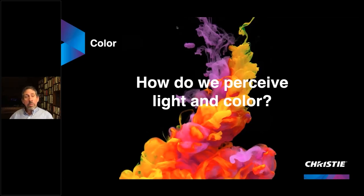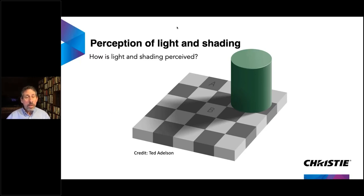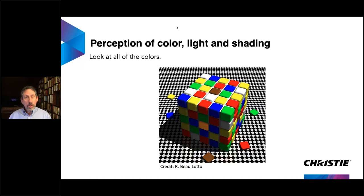First, let's set up some context on how we perceive light and color. Focusing on shading — this is a fairly famous optical illusion, illustrative of how our brains actually interpret things. If you look at square A and square B, everyone sees them as different shades, but the reality is they're identical in color. Our brains tell us a shadow is being cast and it tricks us.